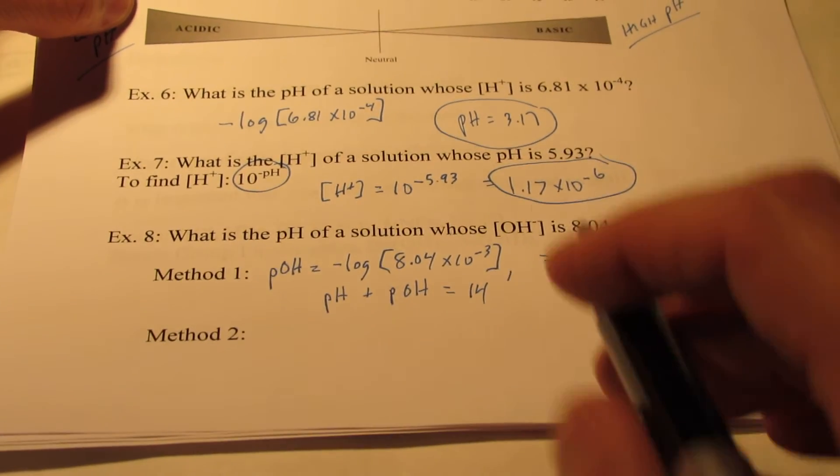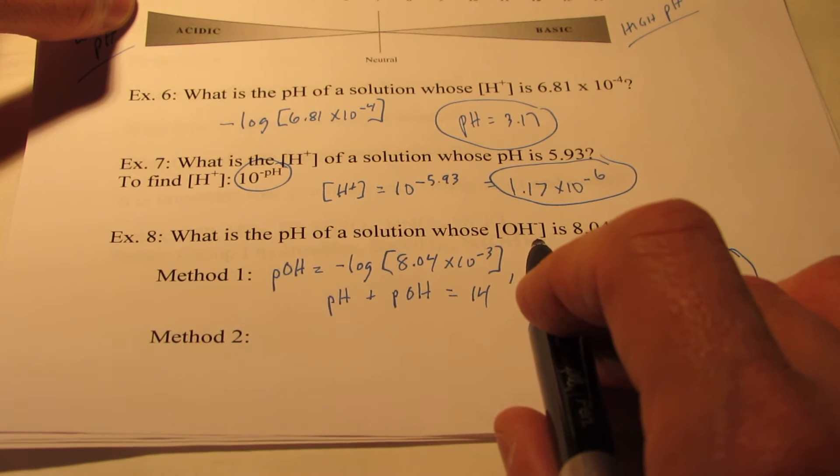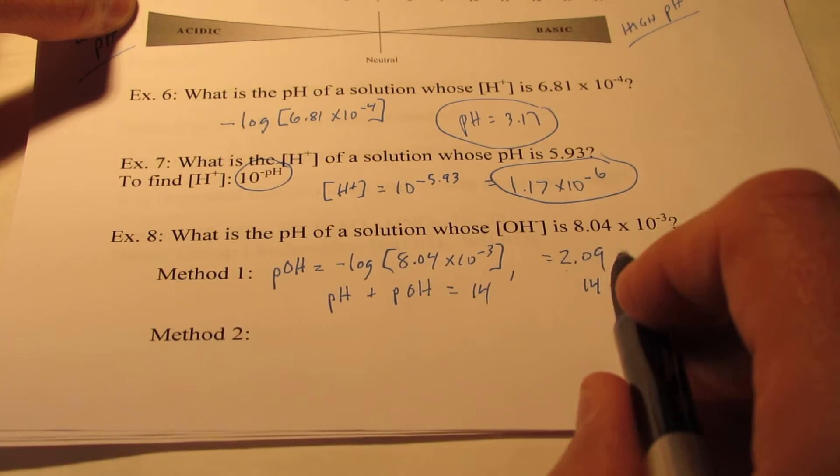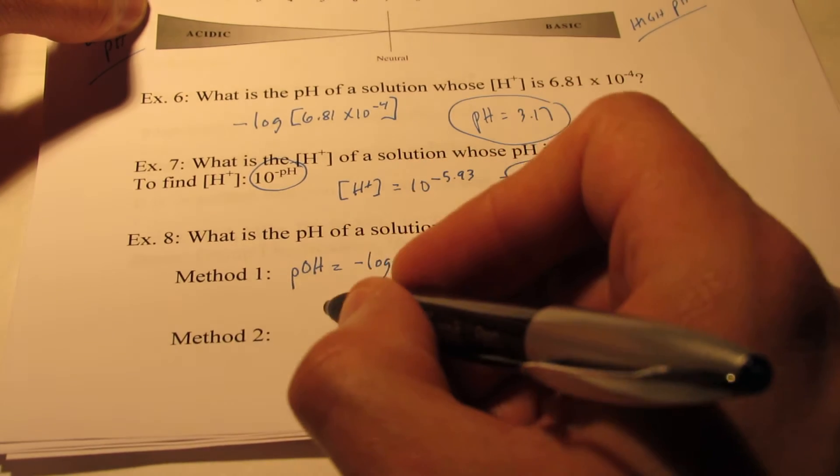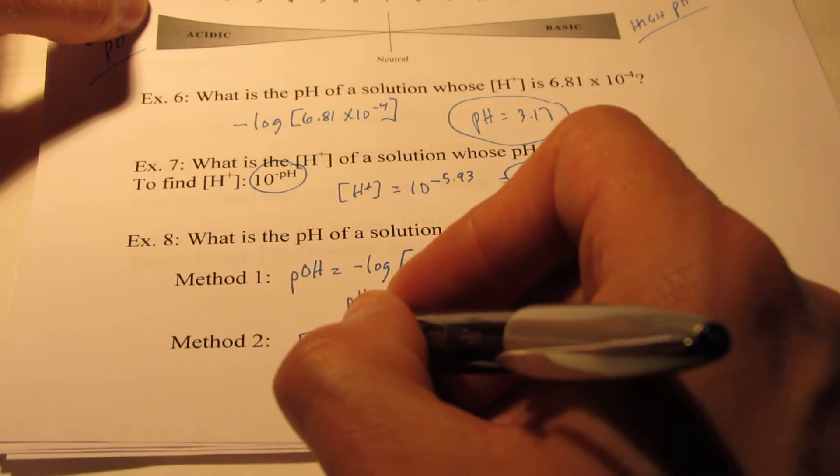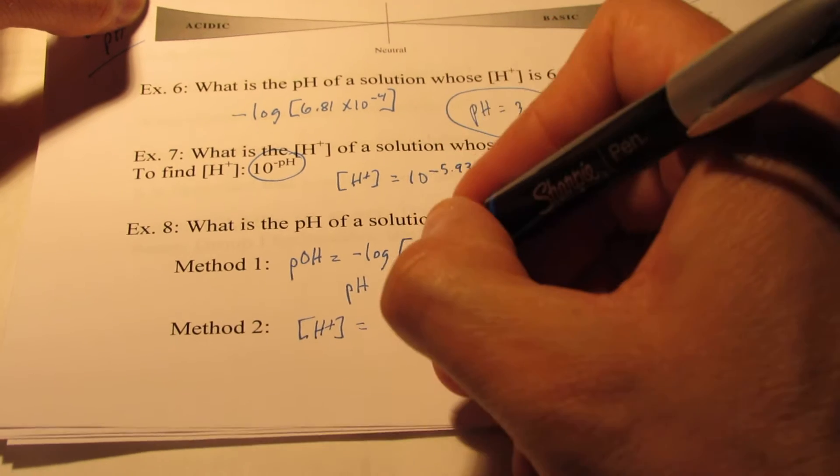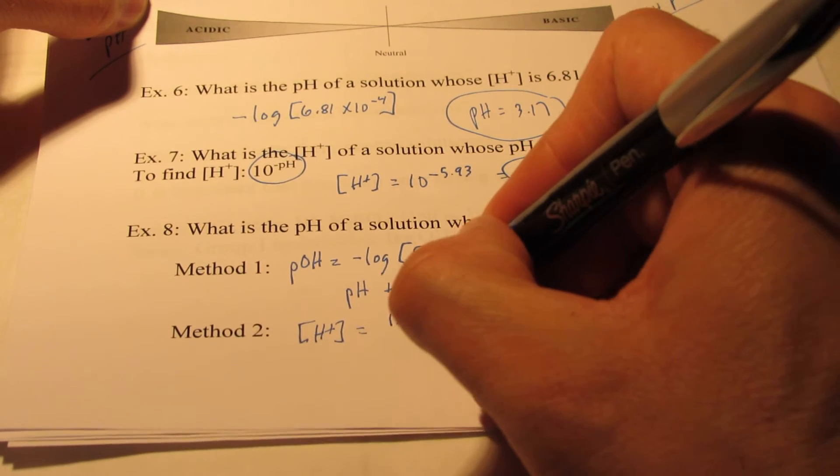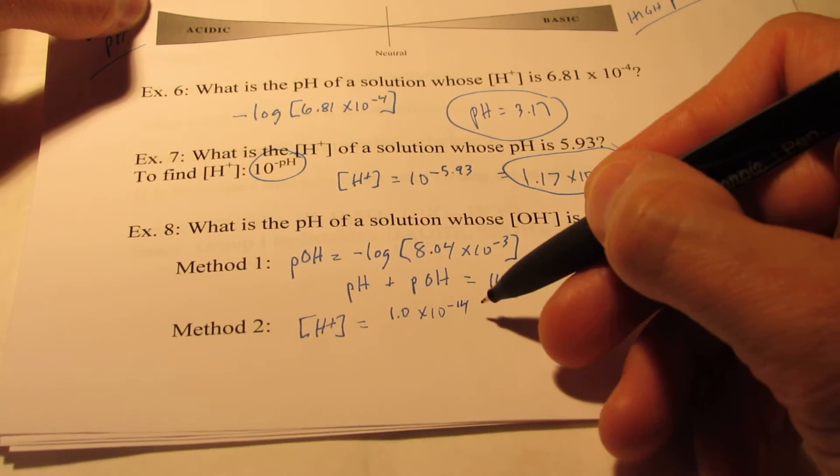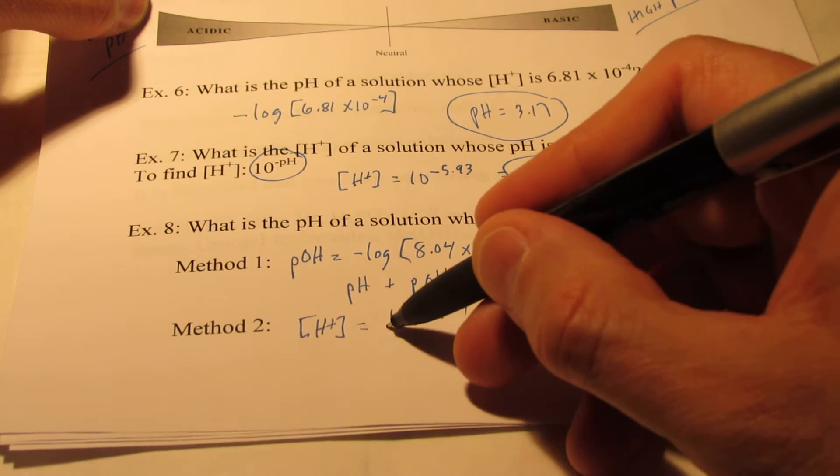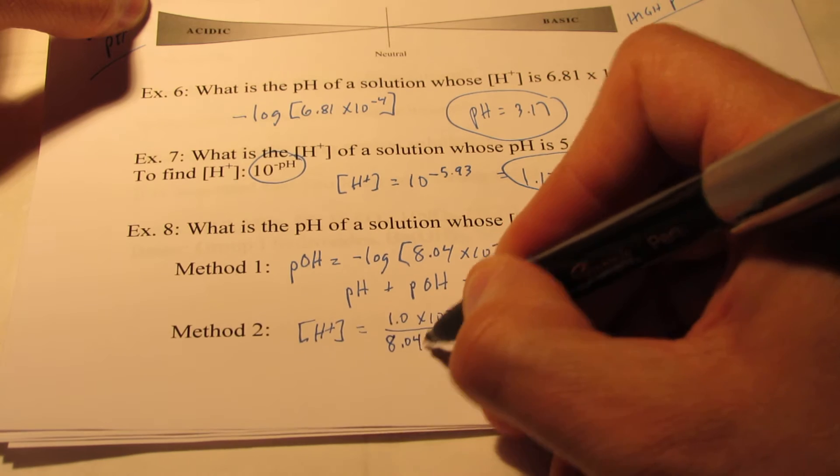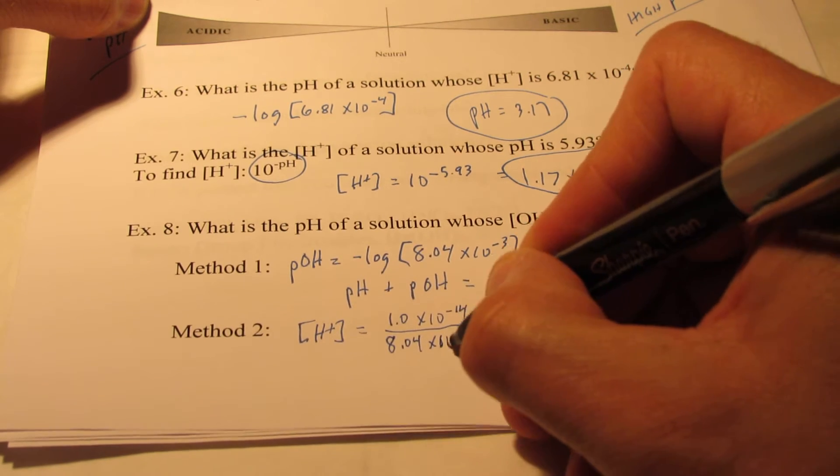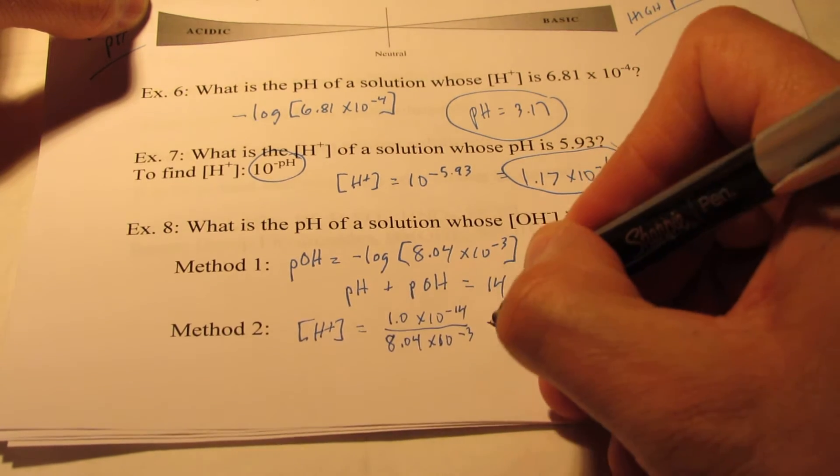To wrap up number eight, if I know the hydroxide ion concentration, didn't we say we could also find the hydronium ion concentration? Remember, wouldn't the hydronium ion concentration equal 1.0 times 10 to the negative 14th? Remember, that's the Kw for water, divided by the hydroxide concentration, 8.04 times 10 to the negative 3rd.